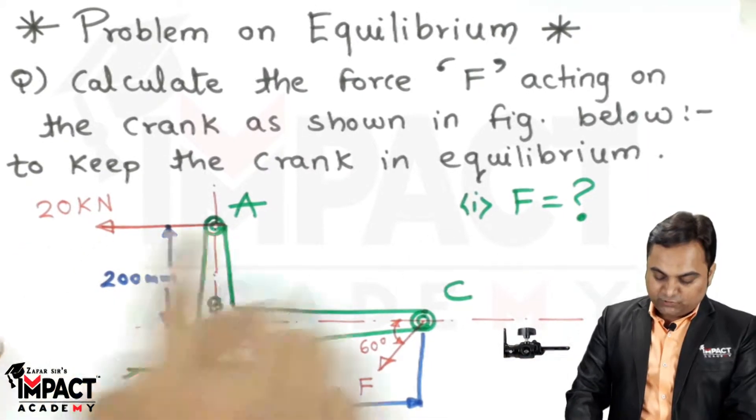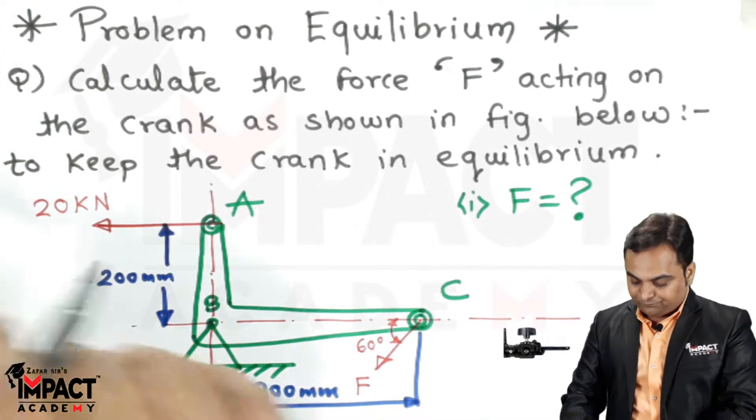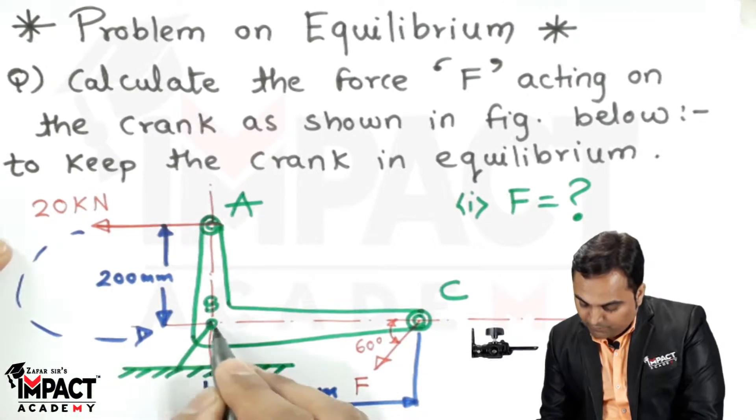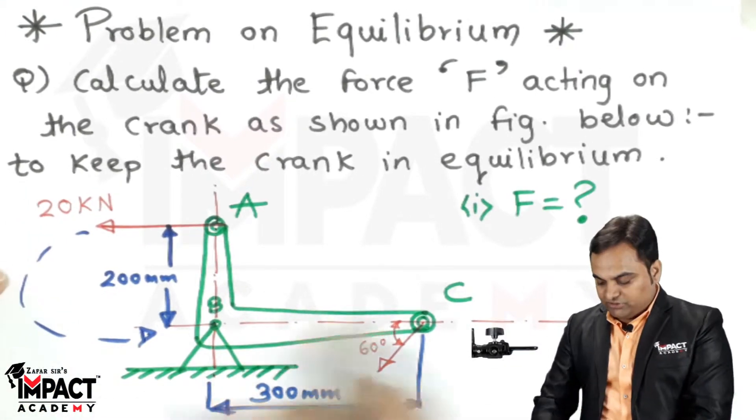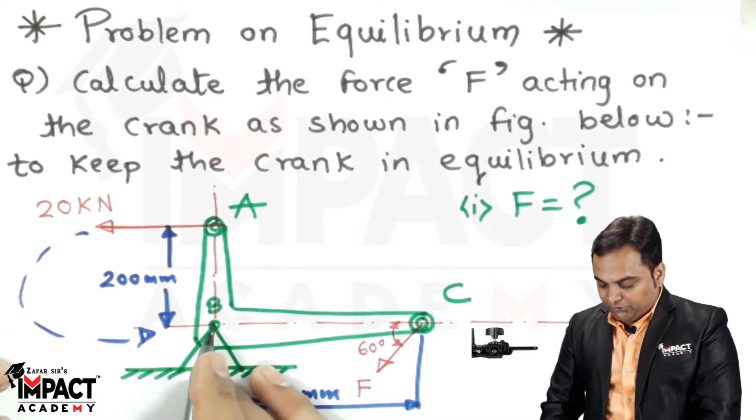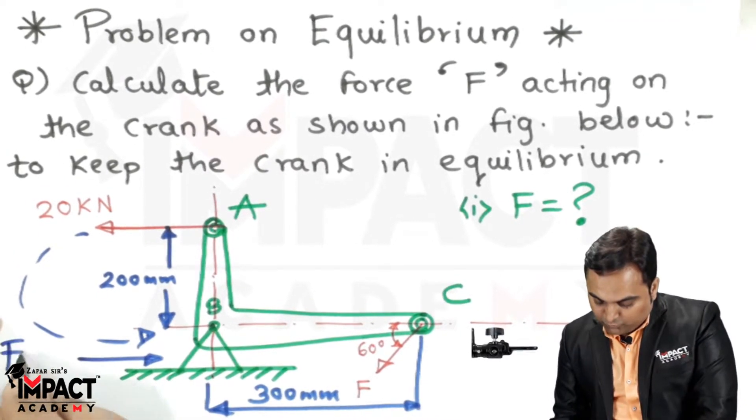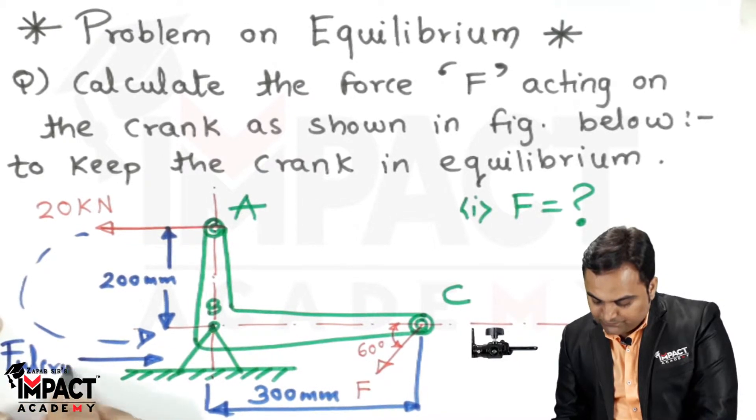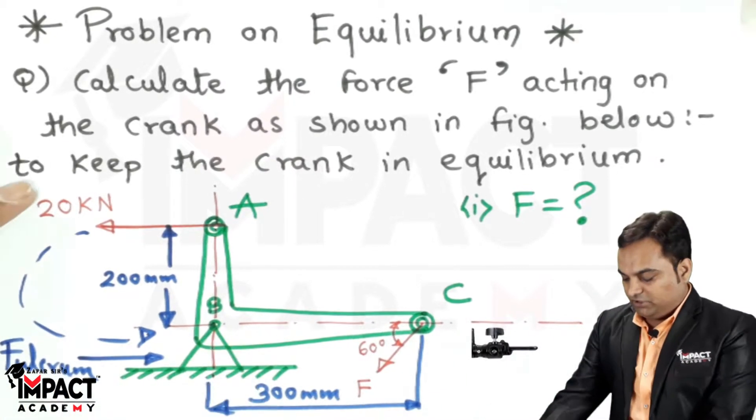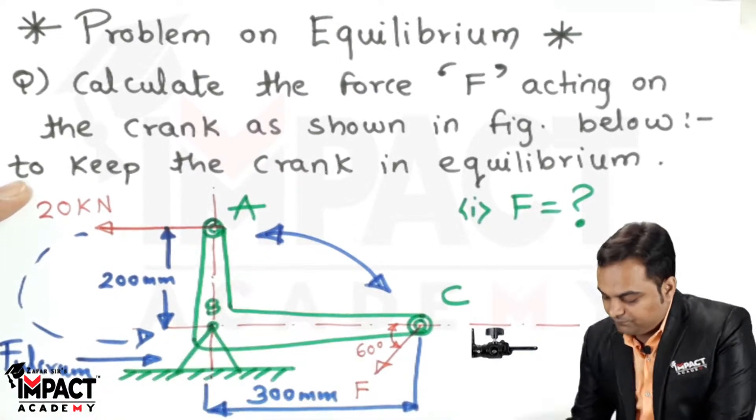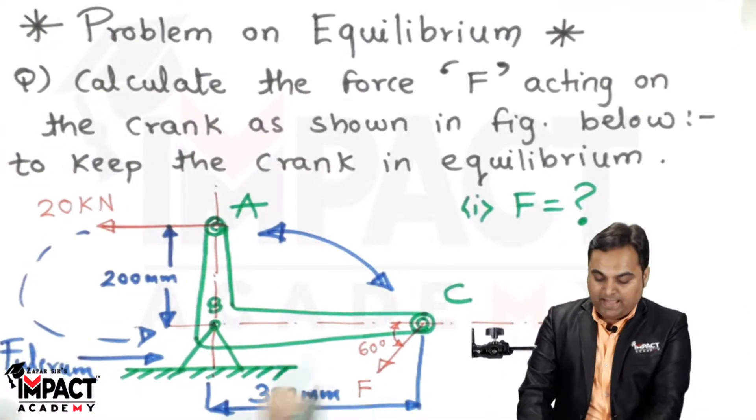When this 20 kN force is acting, it produces a moment about point B because this crank is rotating about point B. This end is called the fulcrum, about which the lever rotates. The fulcrum is the point about which the lever would be rotating or oscillating.